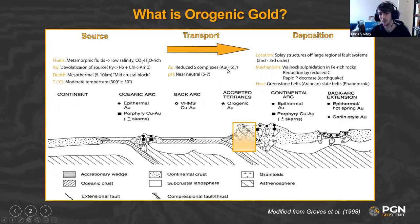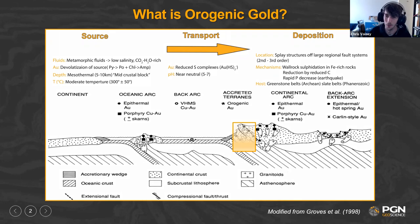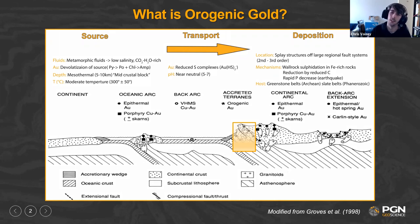You can strip sulfur off gold and have gold come out — you can make pyrite, for example. You can reduce it by interacting with carbon. Rapid pressure decrease helps, though I don't think it's a smoking gun for making gold occur. The normal host is usually greenstone belts in the Archean, and then slate belts or turbidite belts in the Phanerozoic.